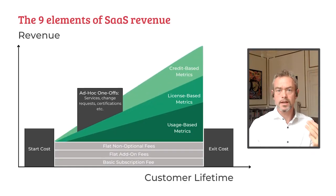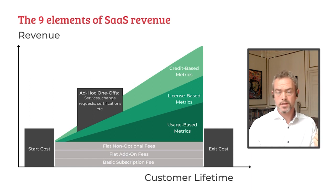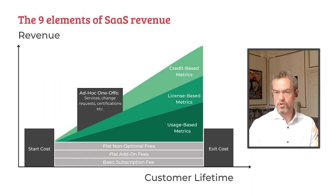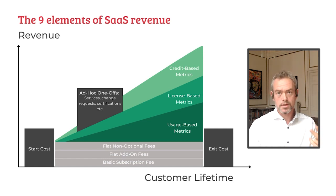So these are the three high-level components of a SaaS pricing architecture: non-recurring transactional fees, flat fees, and metric-based fees. Each has sub-components with varying effects, timing, pros and cons that I've walked through.